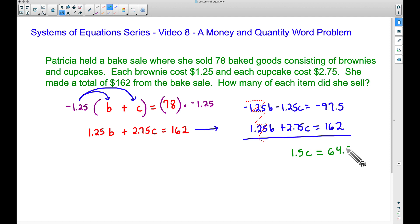Bring down our equals, and now let's take -97.5 and let's add 162, since this 162 is understood to be positive. Doing that will give us a total of 64.5. Now our final step here, we can divide by 1.5 on both sides to get the c by itself. If we take 64.5 divided by 1.5, we will get c = 43. This is how many cupcakes Patricia sold.